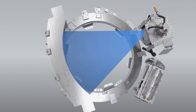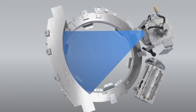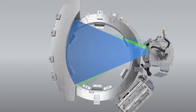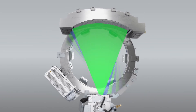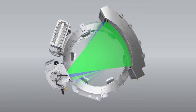The third component is the generator. High-frequency generators are usually used in CT scanners and are designed to be small enough to be located within the gantry. Generators produce high voltage and transmit it to the X-ray tube, with power capacity listed in kilowatts. CT generators produce high kilovolts, generally 120 to 140 kilovolts, to increase the intensity of the beam and thereby reduce patient dose. A higher kilovolt setting also helps reduce the heat load on the X-ray tube by allowing a lower mA setting, which extends the life of the tube.